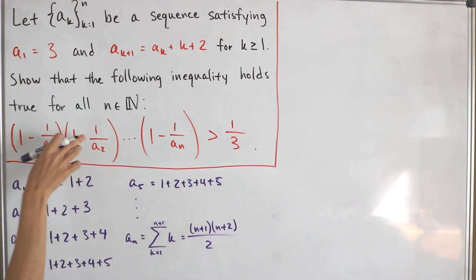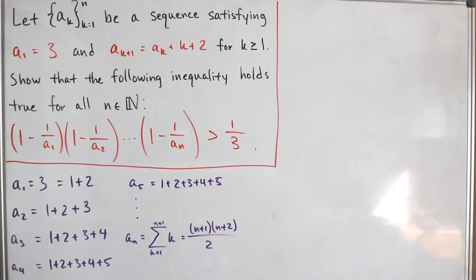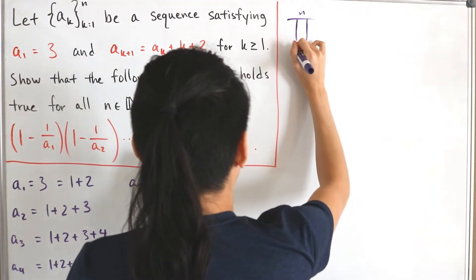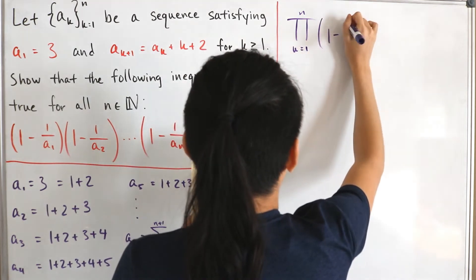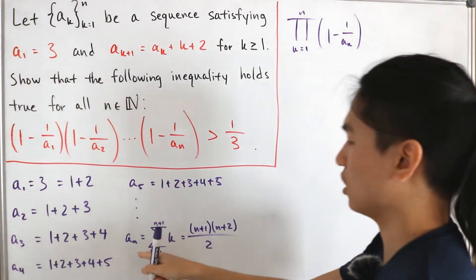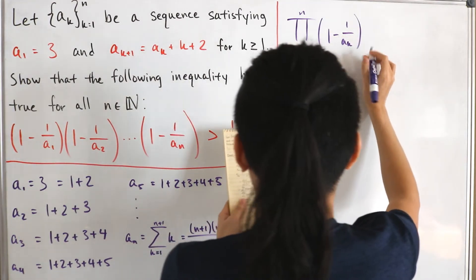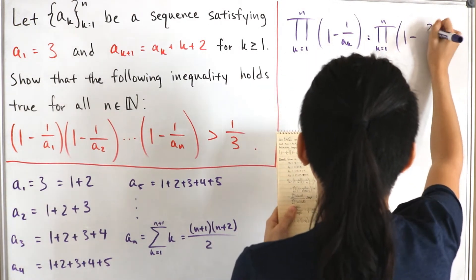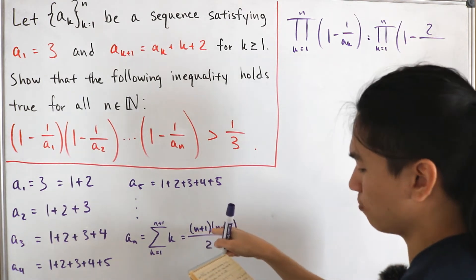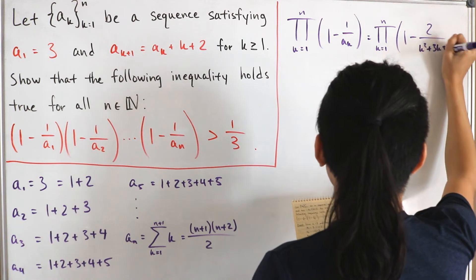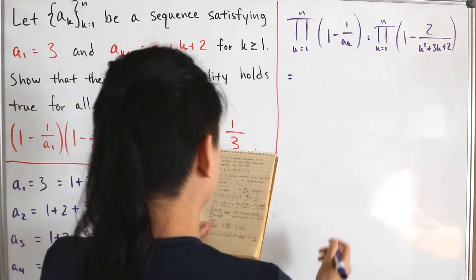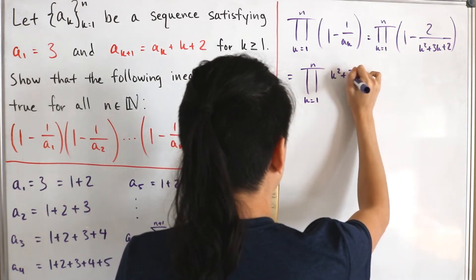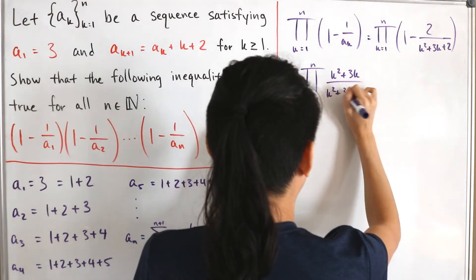With this closed form, let's substitute back into the product. The entire left-hand side is the partial product from k equals 1 to n of 1 minus 1 over a sub k. For the k-th term, substituting in gives the partial product from k equals 1 to n of 1 minus 2 over k squared plus 3k plus 2. Combining over a common denominator, each factor becomes k squared plus 3k over k squared plus 3k plus 2.